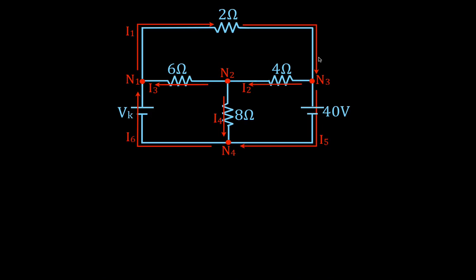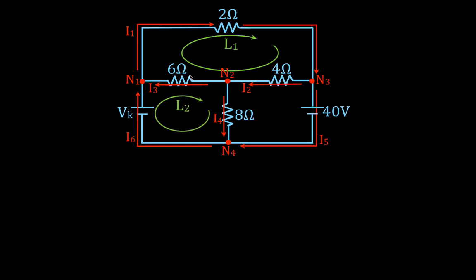Now the last thing we have to do to apply the voltage rule is to identify the direction we're going to go around each of the three loops. We're going to say for the top loop, L1, we'll go clockwise. We'll go around the second loop also clockwise, and around the third loop in the counterclockwise direction. Again, the direction chosen for those loops is completely arbitrary — just pay attention to your negative and positive signs.